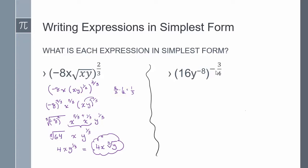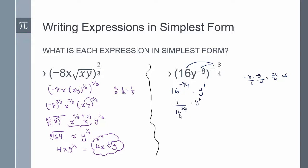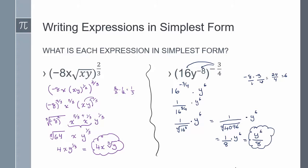To write 16y to the negative 8 raised to the power of negative 3/4: distribute the negative 3/4 to each term. I get 16 to the power of negative 3/4 times y to the power of 6, since negative 8 times negative 3/4 equals positive 24/4, which is 6. Since the exponent on 16 is negative, I take the reciprocal: 1 over 16 to the power of 3/4 times y to the power of 6. Rewriting in radical form: 16 to the power of 3 is 4096, and the fourth root of 4096 is 8. Final answer: y to the power of 6 over 8.